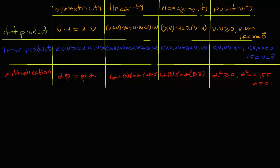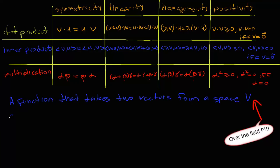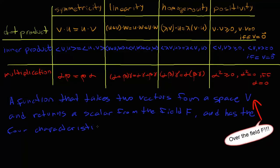So now you have the formal definition of what an inner product is. A function that takes two vectors from a space V and returns a scalar from the field F, and has the four characteristics described above — symmetricity, linearity, homogeneity, and positivity — is called an inner product.